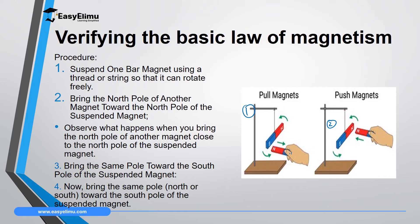What you will realize: when you bring a north pole close to the south pole of the swinging magnet, as shown in the first diagram, there will be attraction. When you bring north pole and north pole together, as in the second diagram, there will be repulsion — a push.